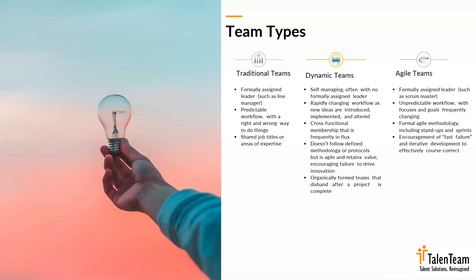A dynamic team is self-managing. It has a rapidly changing workflow depending on the task at hand, and the objectives of the team can be quickly altered depending on what situation comes in. It is cross-functional, so there is a lot of flexibility in engaging multiple kinds of people. There's no defined methodology or protocol they need to follow — it's basically what works for them. These teams are formed organically and disbanded as soon as a particular project is completed.